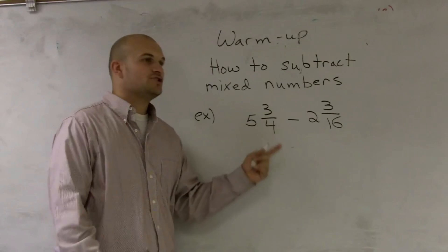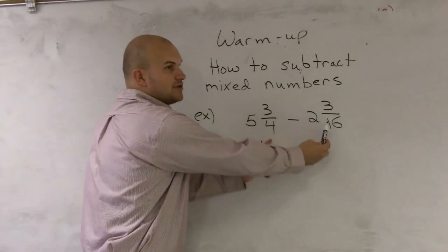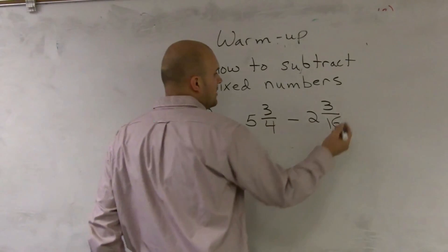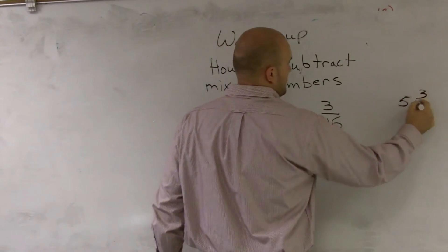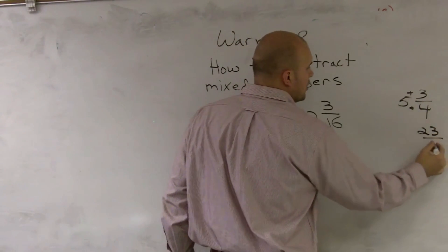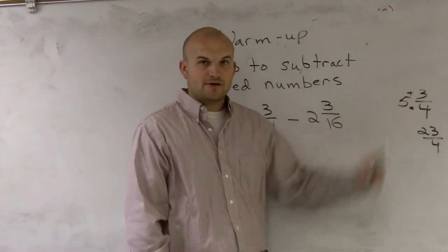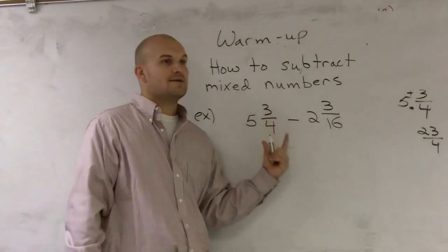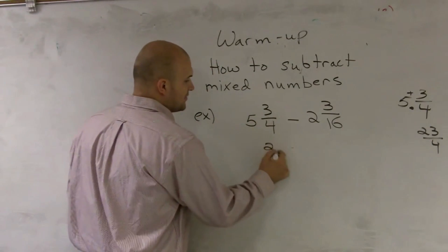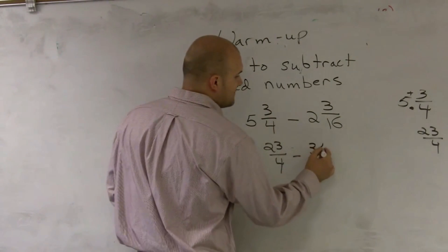Now let's look at how to subtract mixed numbers when you convert both to improper fractions. There are two ways to solve this: subtract the whole numbers and subtract the fractions separately, or convert both to improper fractions. I'll show you the conversion method. We multiply the denominator times the whole number and then add the numerator. So I get 23 over 4. To double-check: 4 goes into 23 five times with a remainder of 3. So 4 times 5 is 20, plus 3 is 23 fourths. Minus: 16 times 2 is 32, plus 3 is 35 sixteenths.